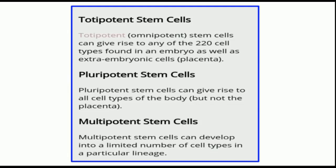There are certain terms you need to know. Totipotent stem cells can give rise to any of the 220 cell types found in an embryo, as well as extra-embryonic cells such as the umbilical cord and placenta. Pluripotent stem cells can give rise to all cell types of the body but not the placenta. Multipotent stem cells are usually adult stem cells — they can develop into only a limited number of cell types in a particular lineage, not all types of cells in the body.